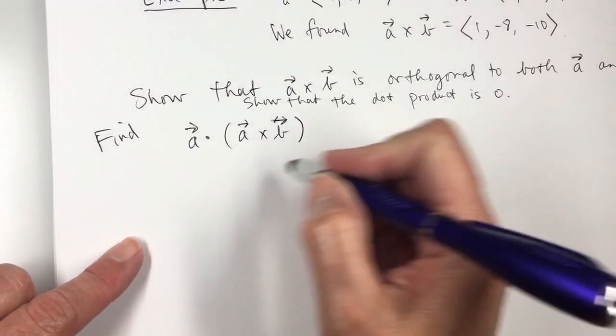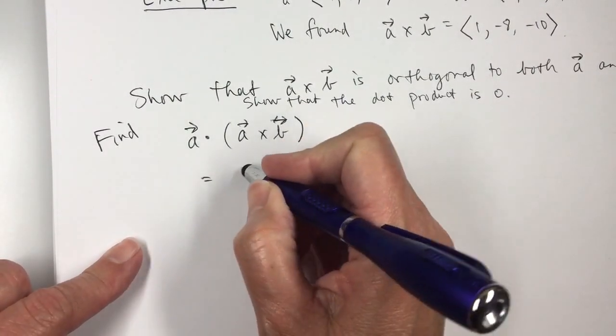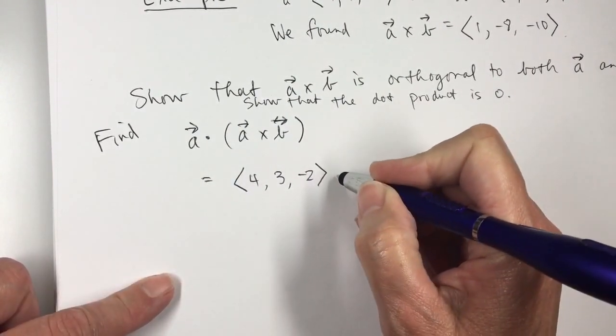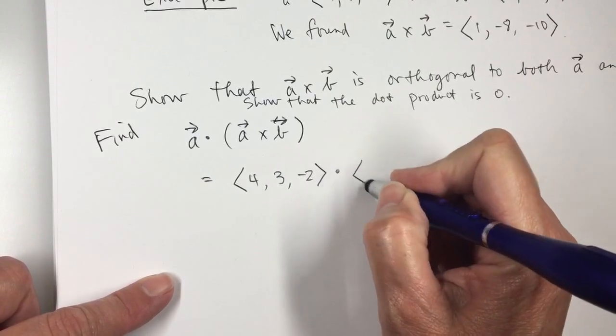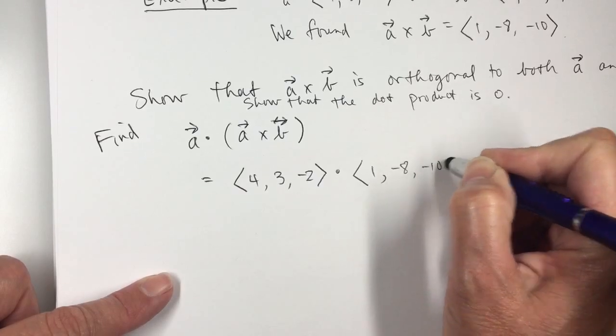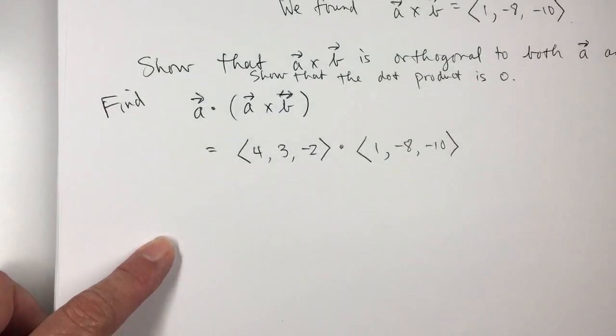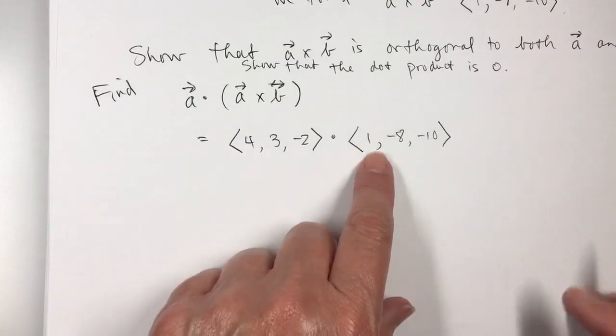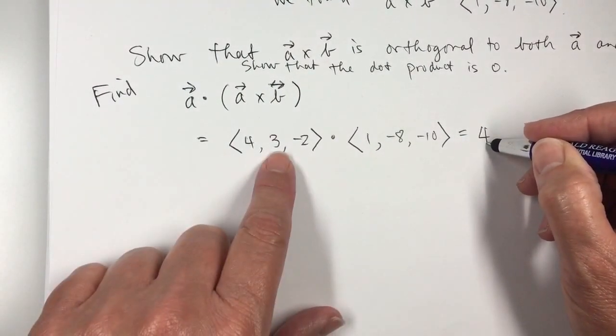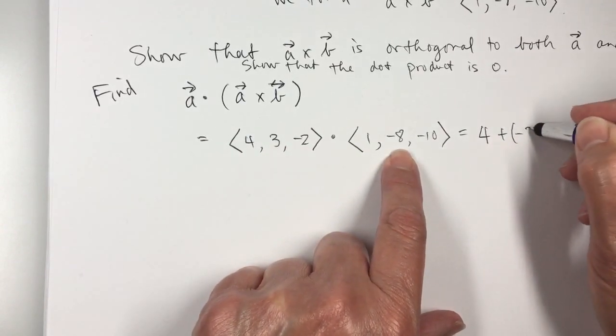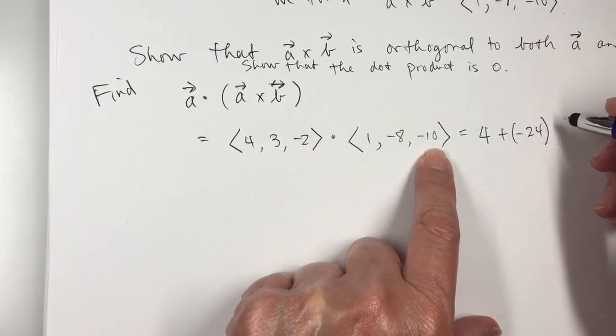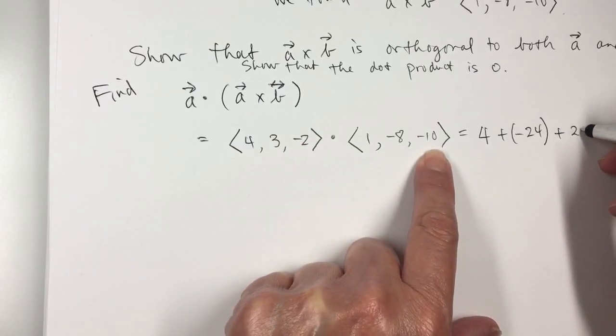So vector A is 4, 3, negative 2. And I'm going to dot that with my cross product, which is 1, negative 8, negative 10. And so for the dot product, 4 times 1 is 4. 3 times negative 8 is negative 24. And negative 2 times negative 10 is 20.